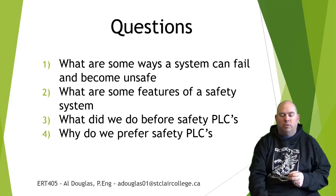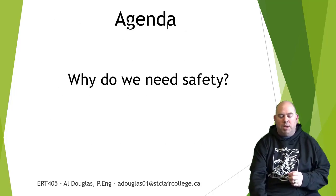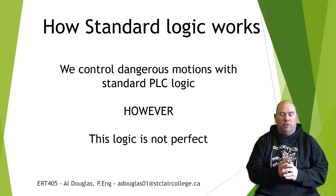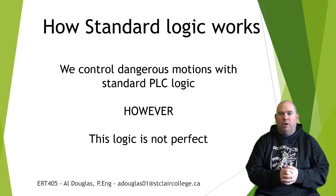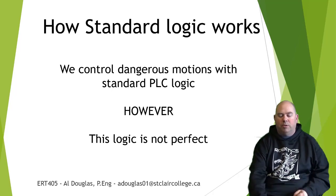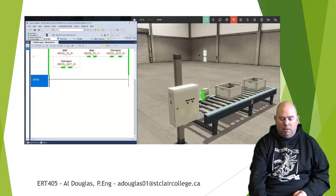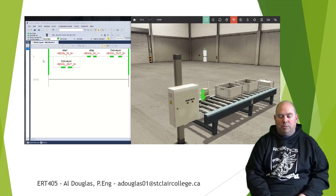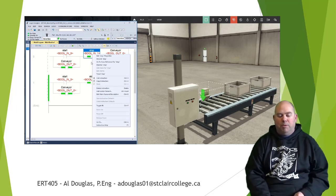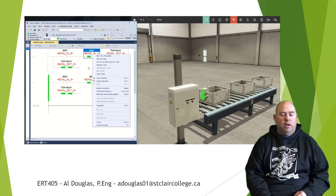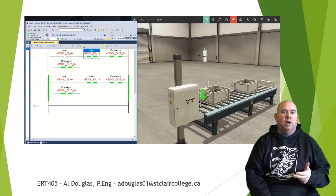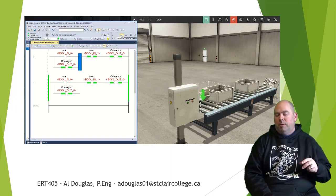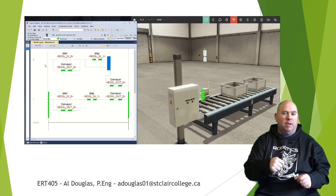First, let's talk about why we need safety. Standard logic is what we've been writing in the labs — we control lots of dangerous motions using just standard logic. This works, but it's not perfect. Here's an example: a simple conveyor start/stop circuit. What happens if someone changes the code and puts a jumper around the stop button, basically making the stop button ineffective?